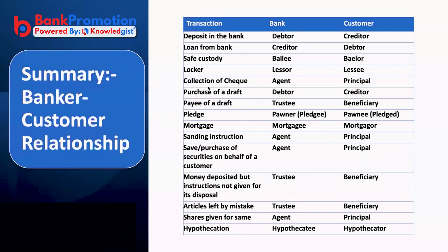The relationship between a banker and customer changes based on the role. Like one person plays different roles — spouse, parent — similarly, a banker's role depends on the type of customer interaction. When a customer keeps a deposit, the banker is the debtor and the customer is the creditor. For collection of a cheque, the banker becomes the agent and the customer the principal. For purchase of a draft, the banker is debtor and customer is creditor. For payment of a draft, it's trustee and beneficiary. For pledge, it's pledgee and pledger; for mortgage, mortgagee and mortgager.